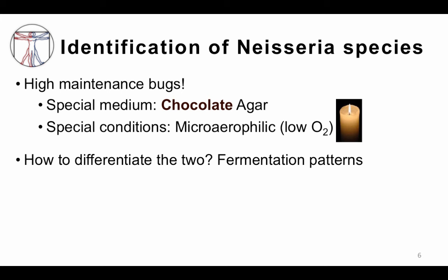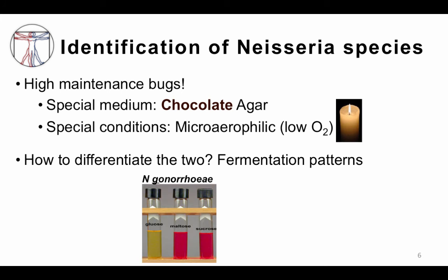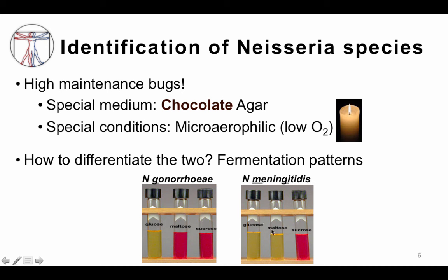To differentiate Neisseria meningitidis from Neisseria gonorrhea, we use different sugars and look at fermentation patterns. Neisseria gonorrhea — note the G — ferments glucose but not maltose or sucrose. The glucose tube turns yellow indicating fermentation and a change in pH. Neisseria meningitidis has both an M and a G, so it ferments both glucose and maltose. That's an easy way to remember the differentiation.